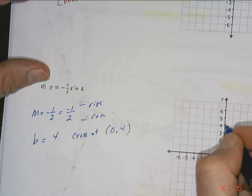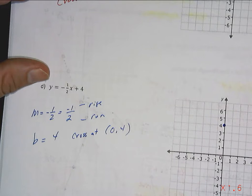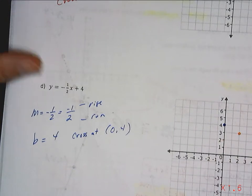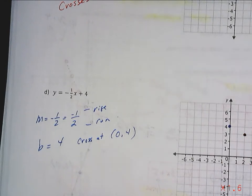So plot my point, 0,4, go over two, one, two, go down one, boom, I'm done people. I have my two points. That is enough.